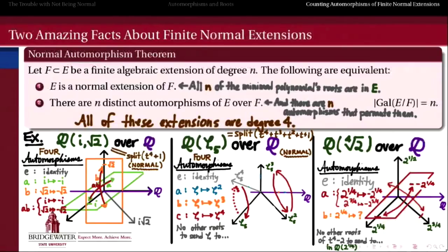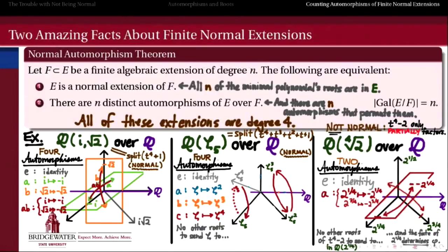Now that I've covered both possibilities — 2^(1/4) goes to itself giving the identity, and 2^(1/4) goes to its opposite giving automorphism A — there are no other possibilities, because the fate of 2^(1/4) completely determines the automorphism since it generates the rest of the basis. Therefore there are in fact only two automorphisms of this field over Q, and not 4. The polynomial t⁴ − 2 doesn't split in Q(2^(1/4)); it only factors partially into (t − 2^(1/4))(t + 2^(1/4)) times a quadratic irreducible factor. That makes this not a normal extension, and that leads to the fact that there are not four automorphisms of this field over Q.